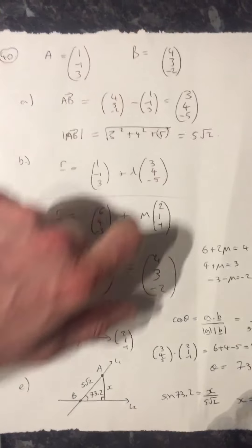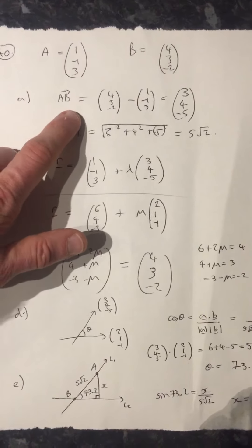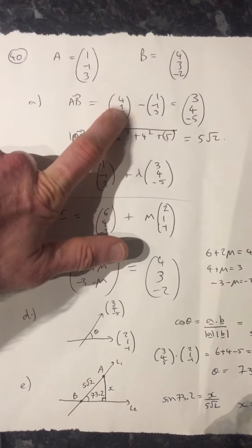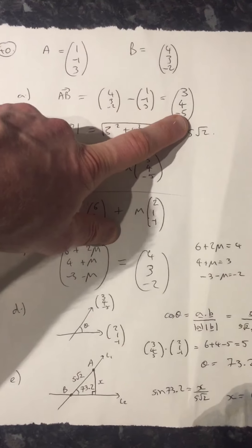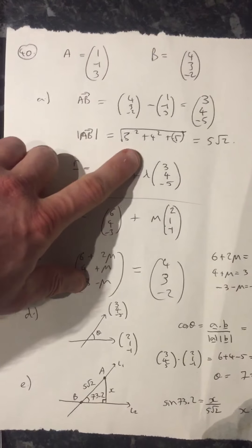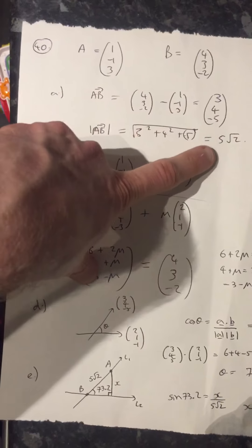We've got the position vector of A and the position vector of B. I found AB by just taking those away, so B take away A. That gives me AB.